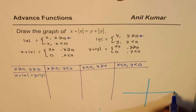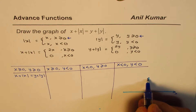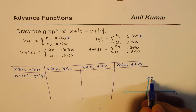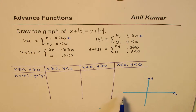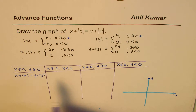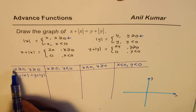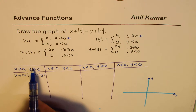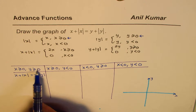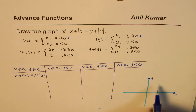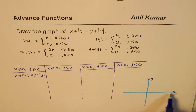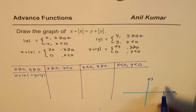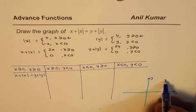Let me sketch the function here. This is our positive x-axis and that is the y-axis. When we say x is greater than or equal to 0 and y is greater than or equal to 0, we are in quadrant 1.